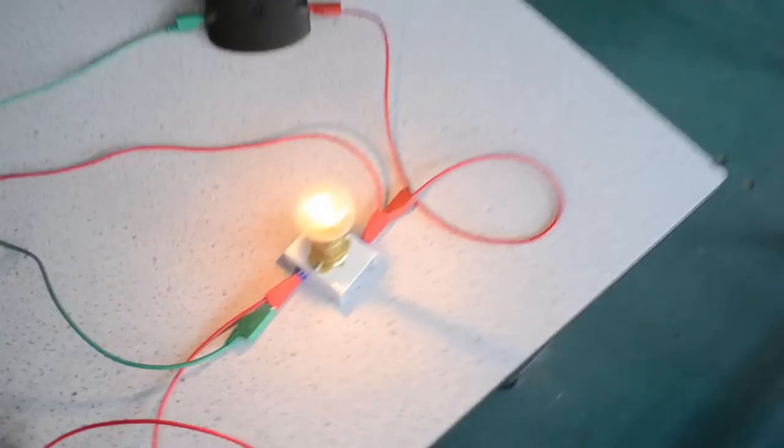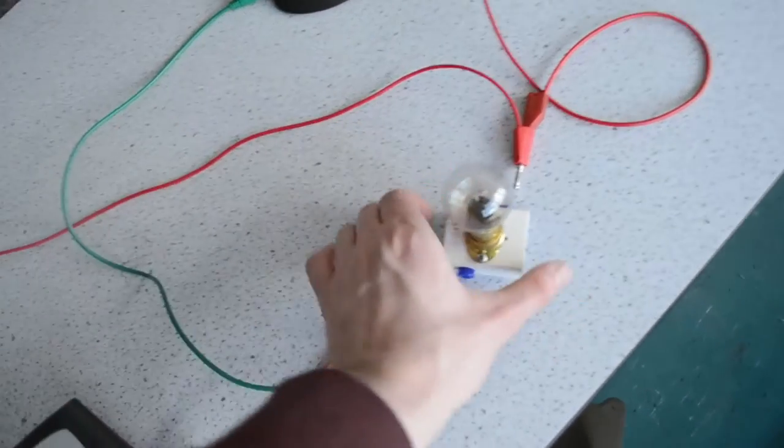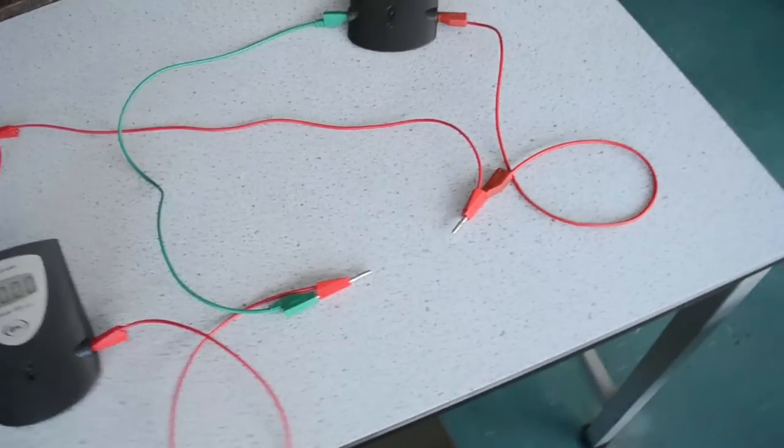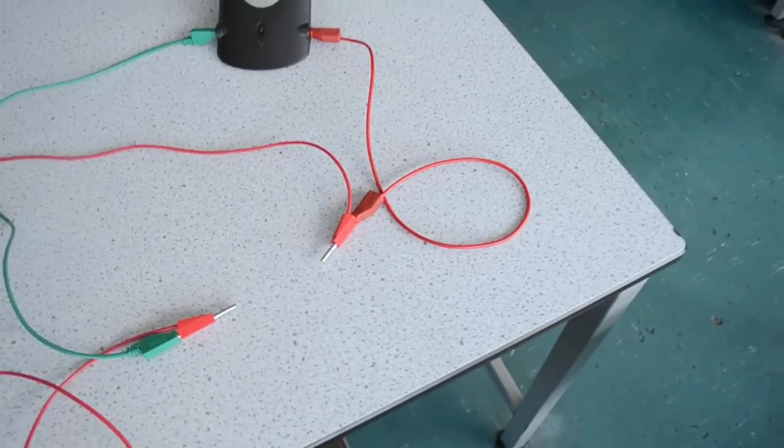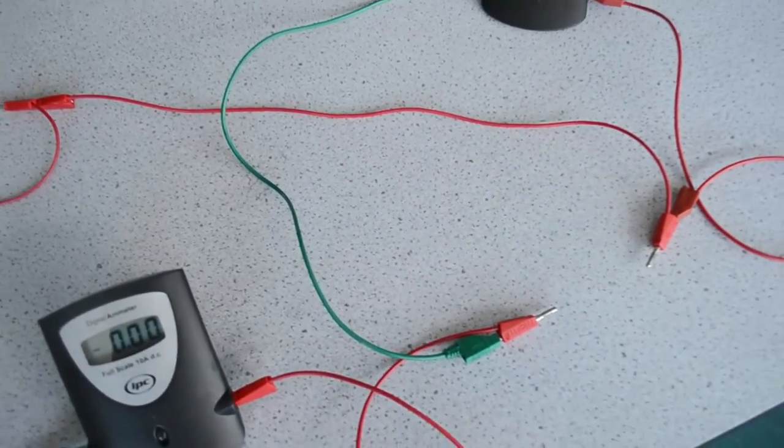If we wanted to measure a different device, we would simply replace the light bulb with another object, perhaps a diode, and we do the same measurements again.